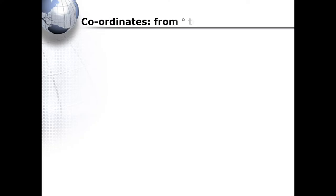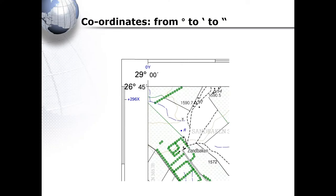When working with coordinates, it's important to remember that South Africa is located south of the equator and east of the Greenwich Meridian. Therefore, your latitudinal coordinates will always be south and your longitudinal coordinates will always be east. Remember, one degree is 60 minutes, and the minute blocks are located in the margins on your map.